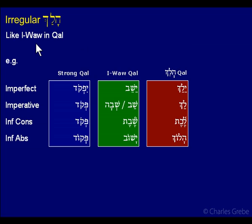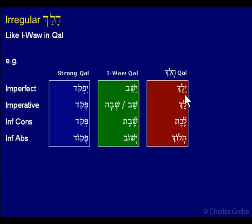Halakh behaves like a first-Vav in the Kal, and here are some examples: the imperfect, imperative, and the two infinitives. For the strong verb we have Yifkod; the first-Vav though doesn't look like that — we have the two Tzeres, the E-type: Yeshev. And lo and behold, Halakh in the imperfect 3MS is also like that — it's Yeleich. Who would guess? The He is dropped and it's as if there was a Vav there.